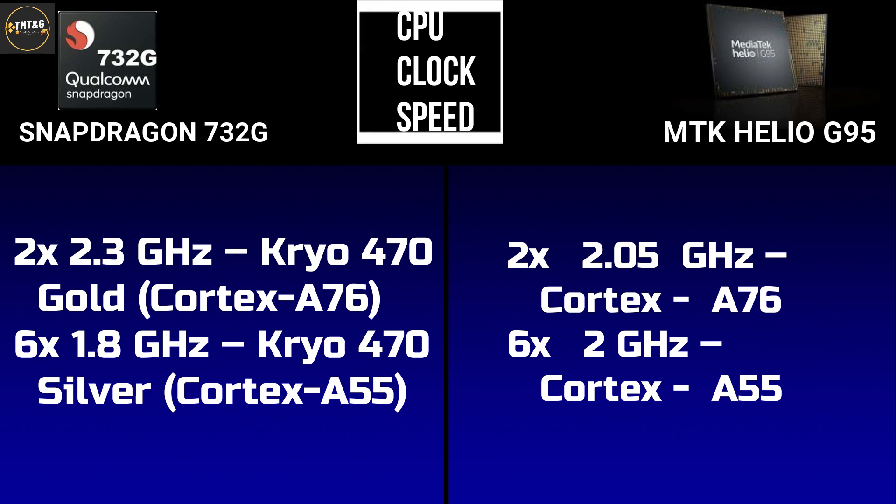The next comparison is CPU clock speed. The Snapdragon 732G has a total of 8 cores — 2 performance cores clocked at 2.3GHz (Cortex A76) and 6 efficiency cores clocked at 1.8GHz (Cortex A55). The Mediatek Helio G95 also has 8 cores — 2 performance cores at 2.05GHz and 6 efficiency cores at 2.0GHz, both using ARM Cortex A55. So the Snapdragon 732G is a little better in CPU clock speed.